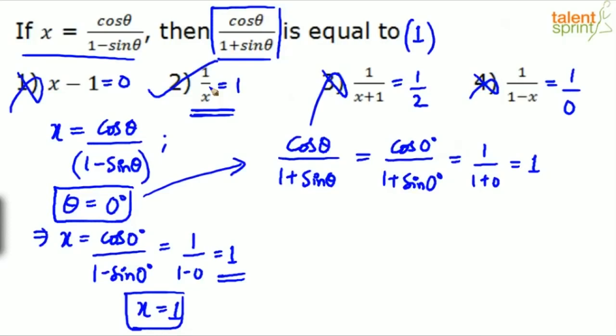So cos theta divided by 1 plus sine theta should be 1 by x. So just substitute some value of theta. Remember, theta should be taken in such a way that the solution should be defined. The numerical value should be defined. You cannot go for undefined solutions. You can follow conventional method also. If you are not very comfortable, you can follow some conventional method. Maybe multiply something on both sides for the given equation and do some calculation.